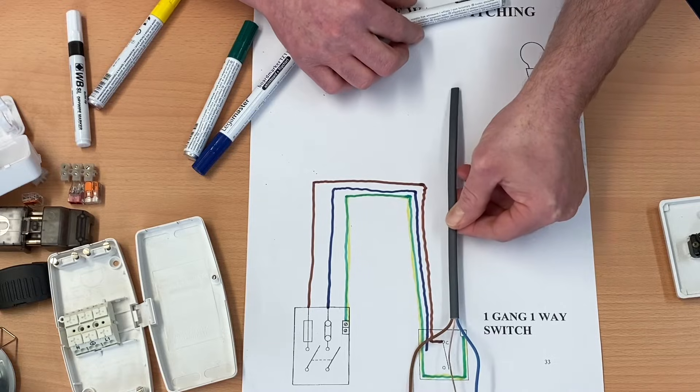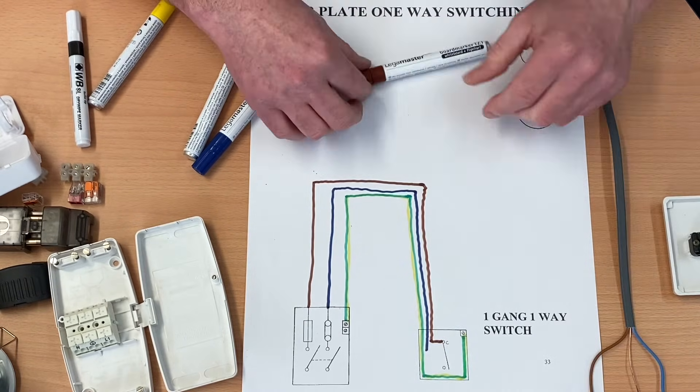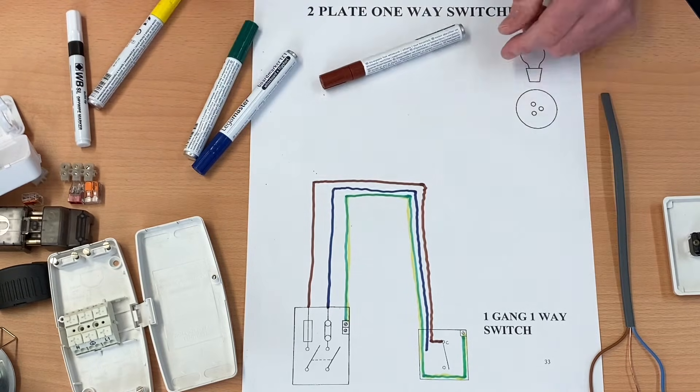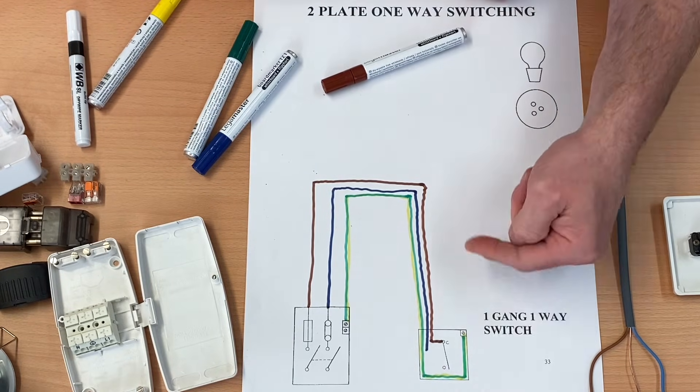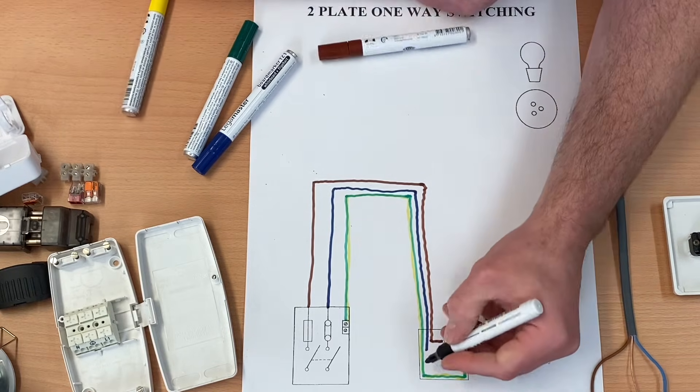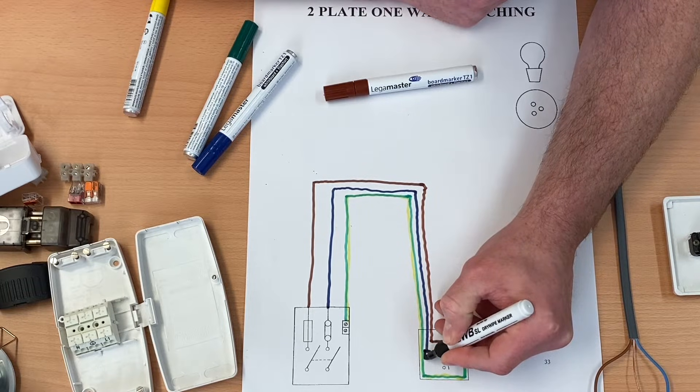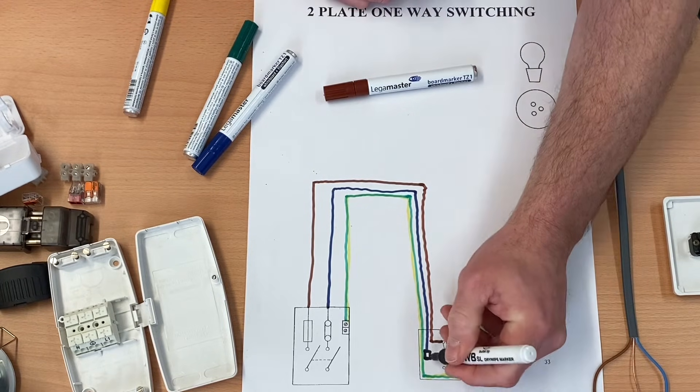And then we're going to bring a cable out that comes out and feeds our lighting point or lighting points, depending on how it's going to work. So again, this is tricky for me because obviously I want to keep cables away and make it as clear as I possibly can in here. But the neutral itself is going to need joining. So if I put just something on there to suggest that's a connection of some sort. So that's a connector.